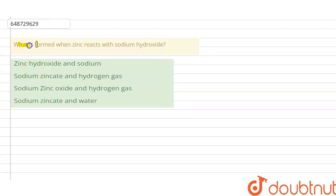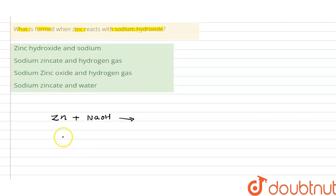what is formed when zinc is reacting with sodium hydroxide? So zinc, that means Zn, is reacting with sodium hydroxide that is NaOH. So first of all, when any acid or base is reacting with amphoteric element